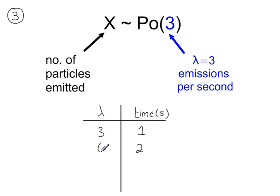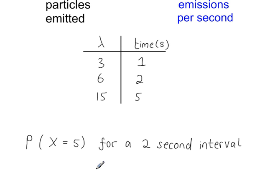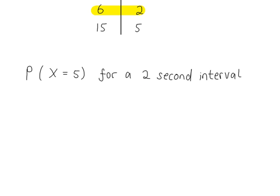For a 5-second interval, we multiply lambda by 5, giving lambda = 15. So you can modify the value of lambda depending on the interval. To work out the probability of exactly 5 emissions in a 2-second interval, we must use lambda = 6, giving the following Poisson distribution.